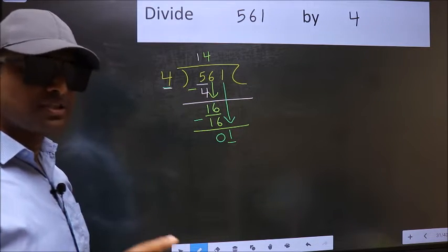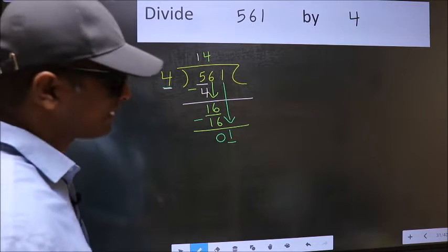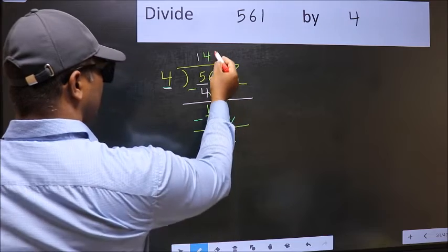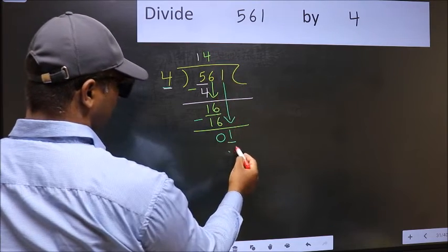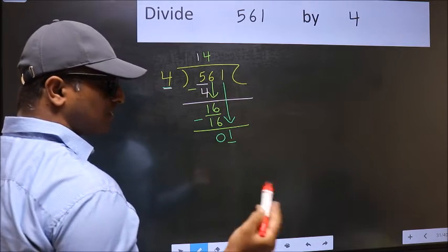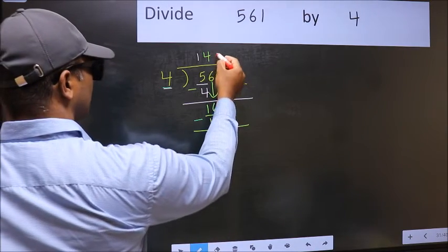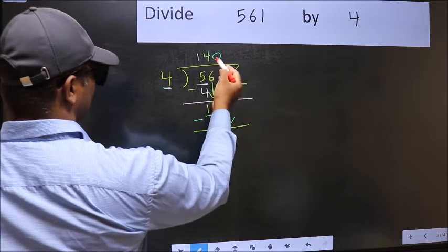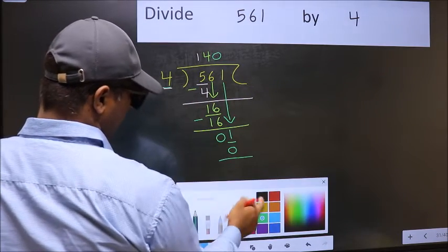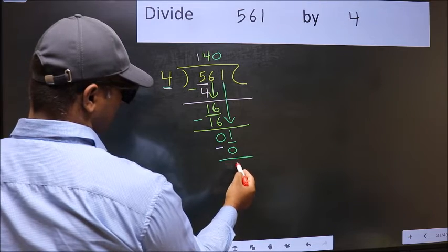Instead, what you should think of doing is: What number should we write here? If I take 1 here, I will get 4. But 4 is larger than 1. So what we should do is we should take 0. So 4 into 0, 0. Now you should subtract. 1 minus 0, 1.